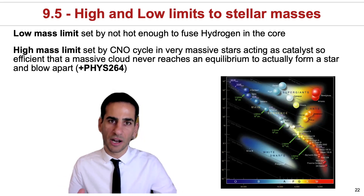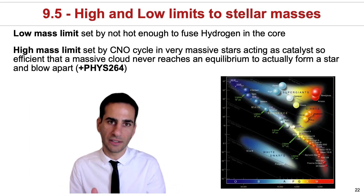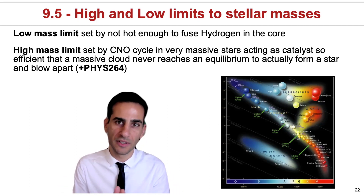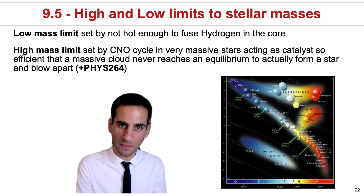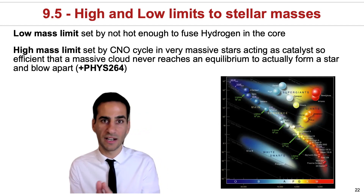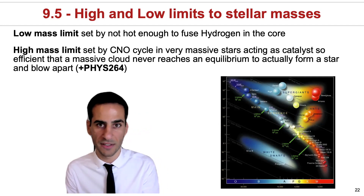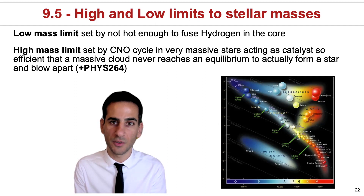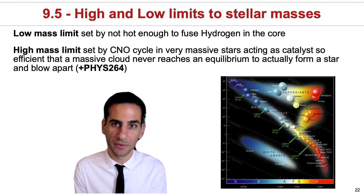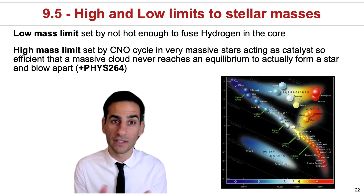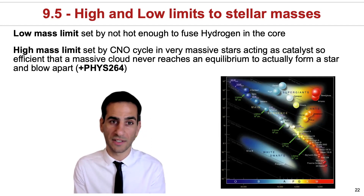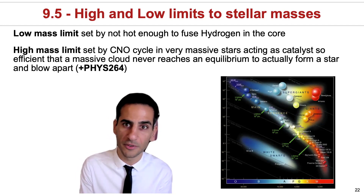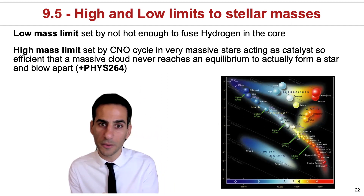When stars form, there are actually very clear limits in terms of what is the lowest mass they can form at and what is the highest mass they can form at. And this has to do with the physics, for example, fusion. And the low mass is essentially set by stars not being hot enough to ever fuse hydrogen in the core.